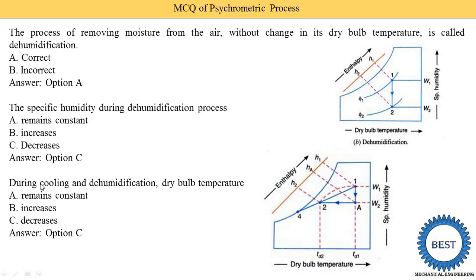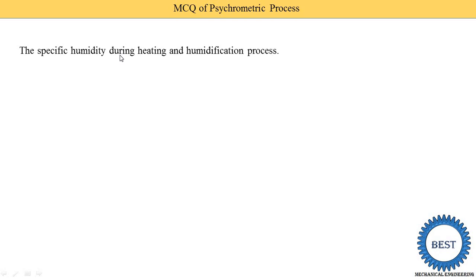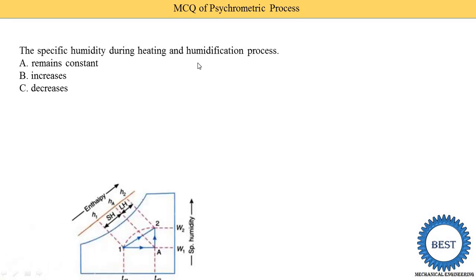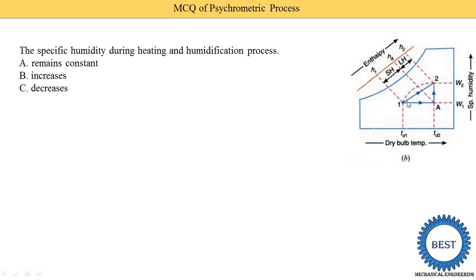The specific humidity during heating and humidification process: remains constant, increases, or decreases? You don't need a graph here either. The key word is humidification — when humidification is present, specific humidity increases; when dehumidification is present, specific humidity decreases. On the graph, process 1 to 2 is heating and humidification, and we see specific humidity increases from W1 to W2. For some MCQs, just basic understanding is required to give the correct answer.